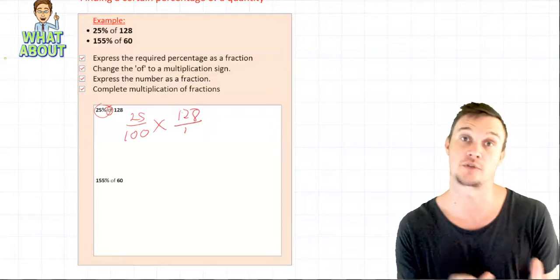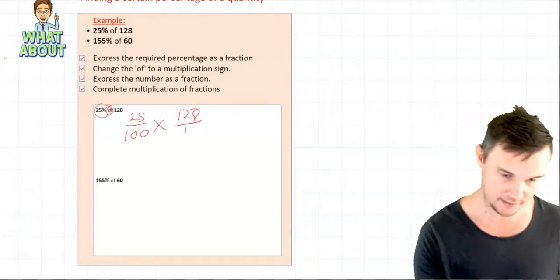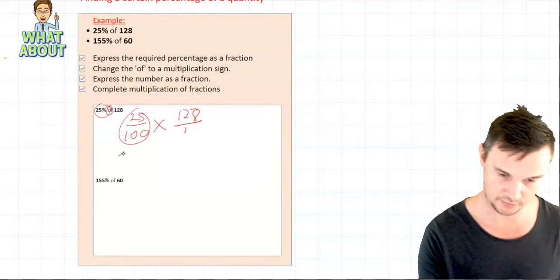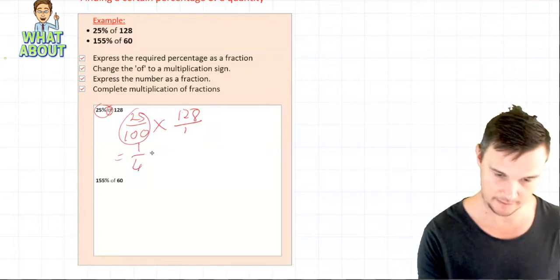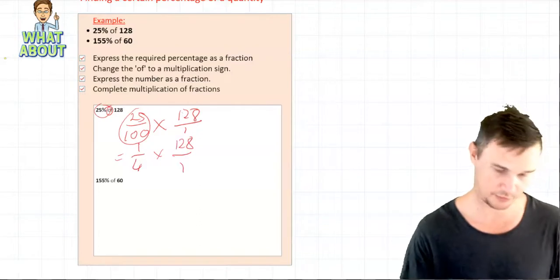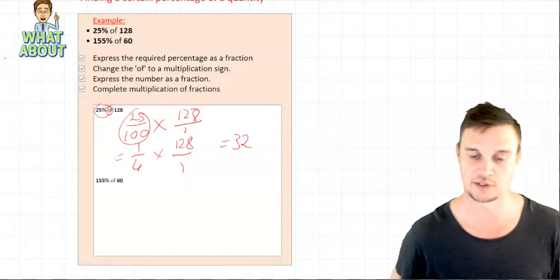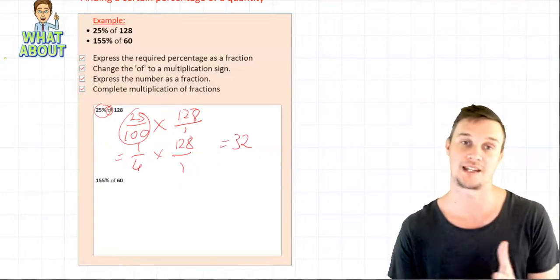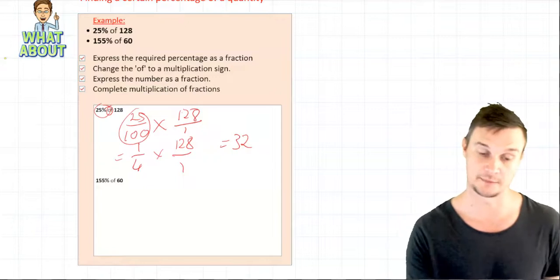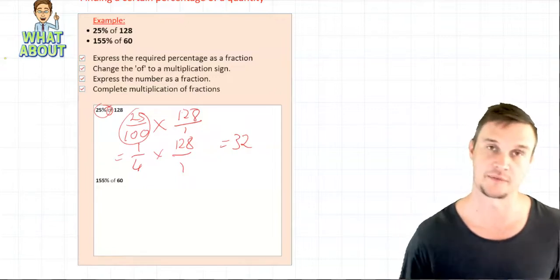Okay I'm now going to go through these cross simplify. So 25 over 100 we know is also equivalent to a quarter times 128 over 1, and if I do my multiplication process through there that will give me the answer of 32. So I know that 25 percent of 128 equals 32.